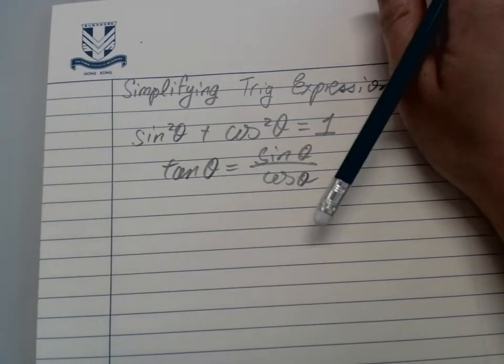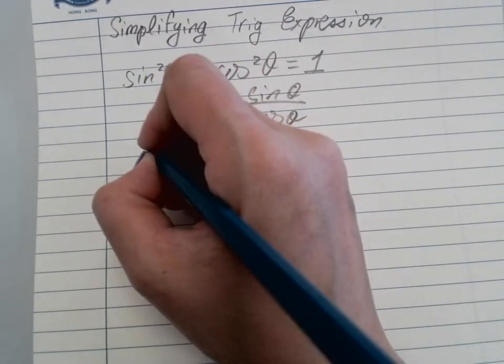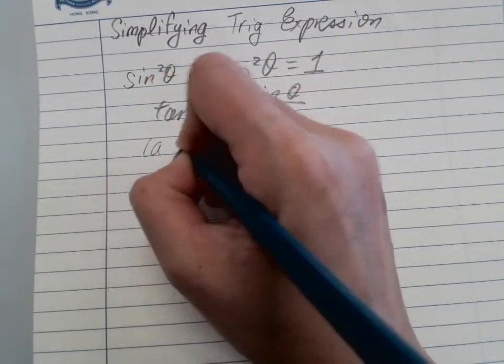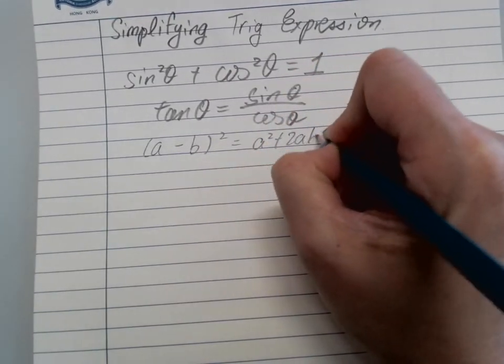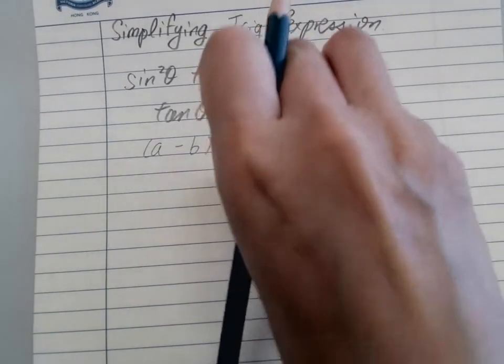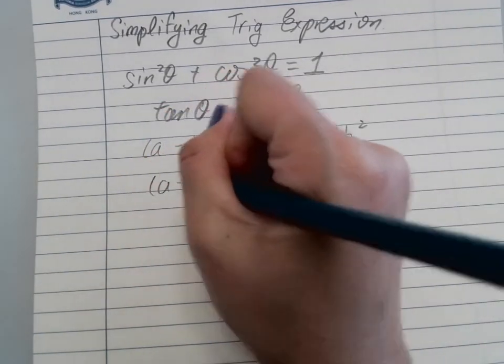Also, you need to remember all those quadratic algebraic expressions, which include (a - b)² = a² - 2ab + b².